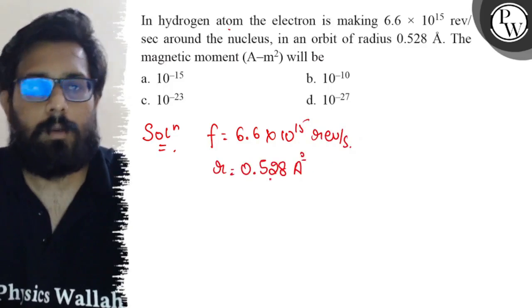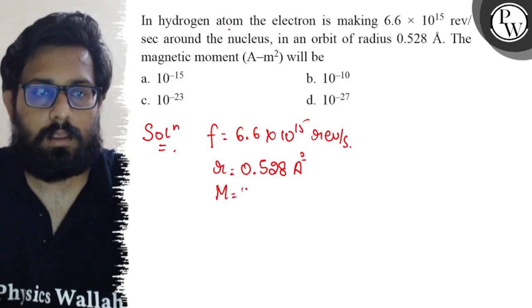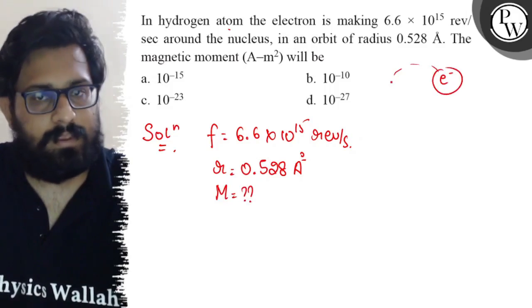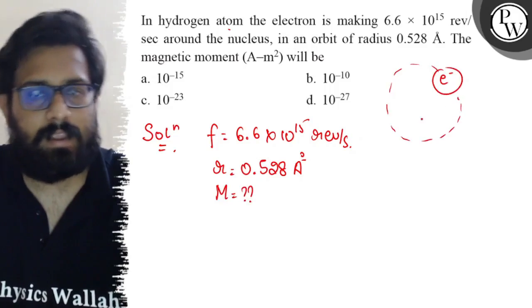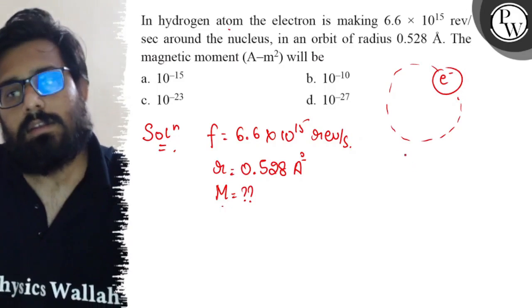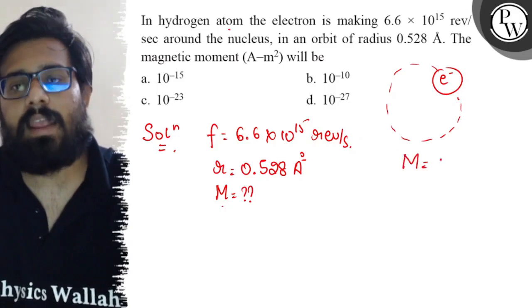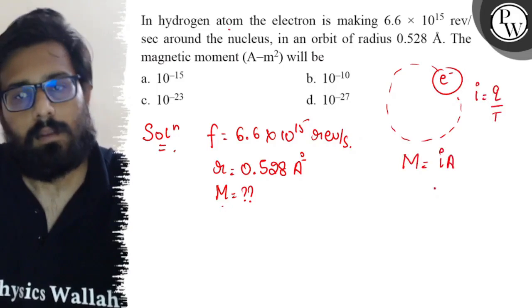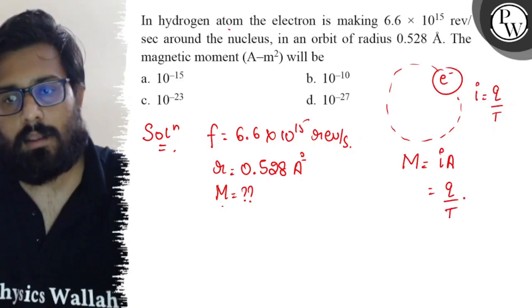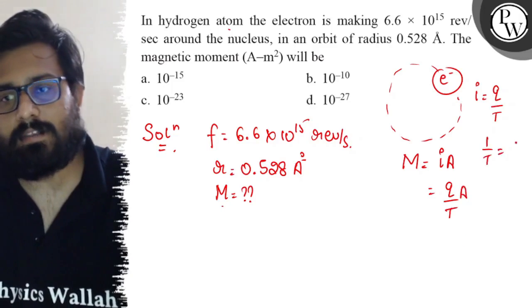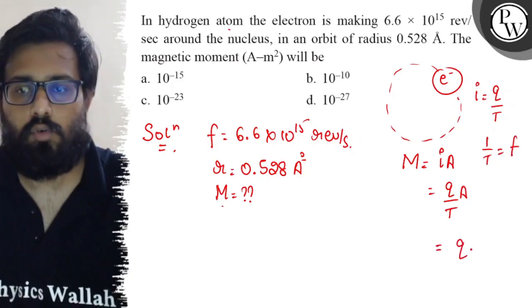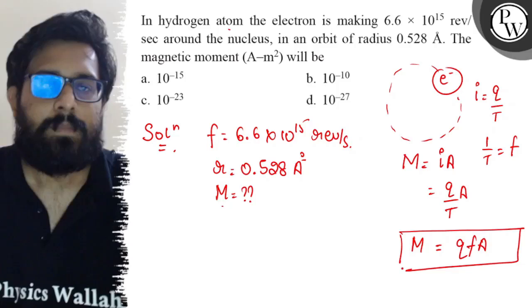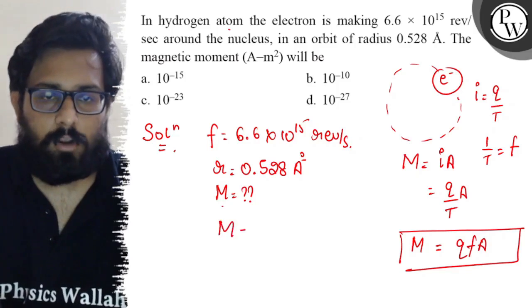We need to find the magnetic moment. How do you define the magnetic moment? For a circular path, magnetic moment M = i × A. I can be written as q/t, so it becomes q/t × A. Also, 1/t can be written as the frequency, so it comes out to be q × frequency × A.